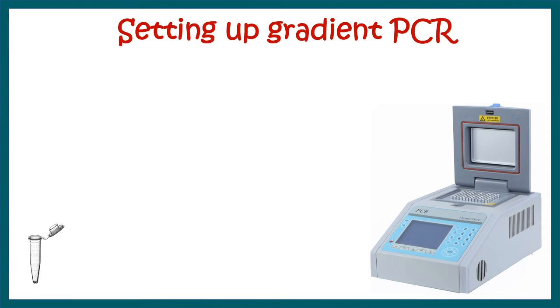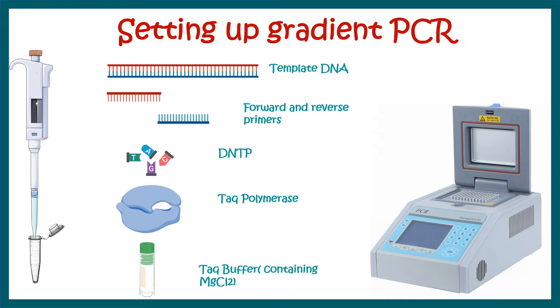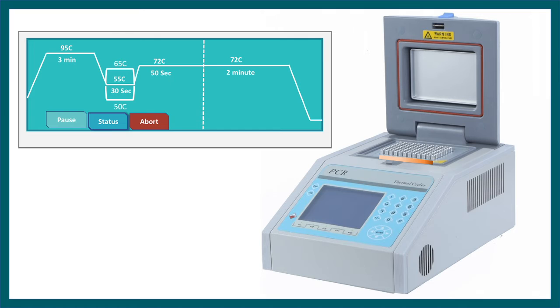So let's talk about how we set up the gradient PCR. In order to set up gradient PCR, we just have to use the normal PCR mix: the template DNA, the forward and reverse primer, dNTPs, Taq polymerase, and the buffer. So everything is as simple as that and just like a normal PCR. But the difference lies in the PCR program and the way the thermal cycler is programmed in terms of temperature.